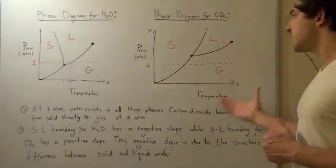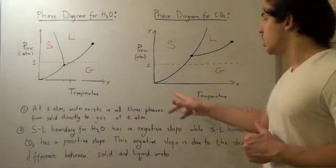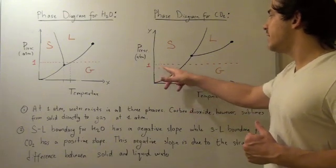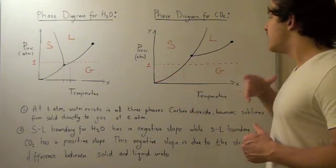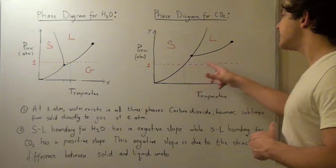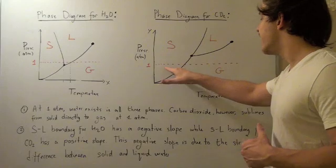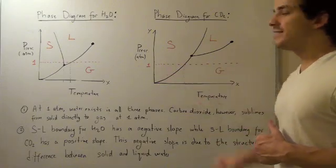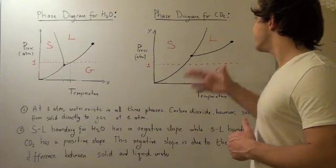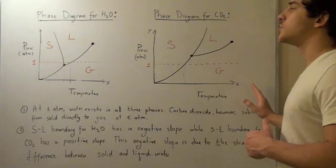For carbon dioxide, however, at one ATM, at low temperatures, below this temperature, we find it in the solid phase. And then we see that above this temperature, our solid sublimes directly to the gas state. And so we can only find carbon dioxide in the solid and gas state at one ATM. The only way we can get into the liquid state is if we increase pressure and then increase temperature.